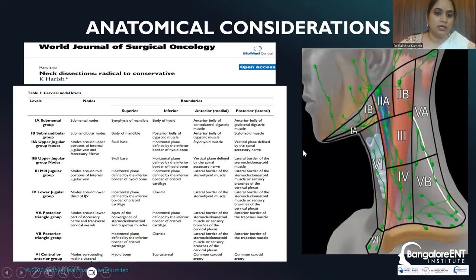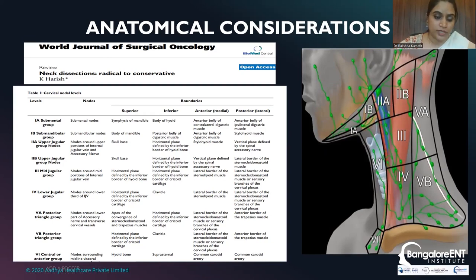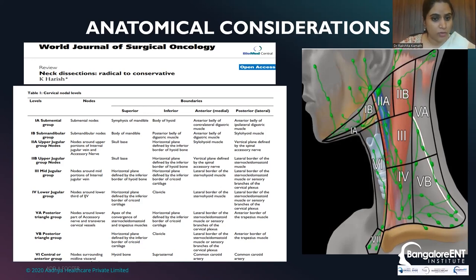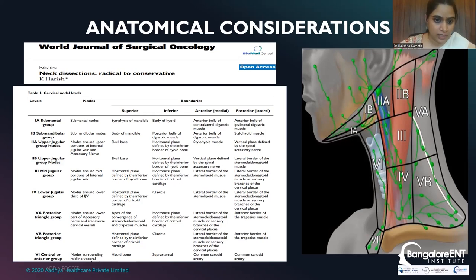Anatomical considerations are extremely important. Level 1a is the submental group: superiorly the symphysis of the mandible, inferiorly the body of the hyoid, anteriorly the anterior belly of the contralateral digastric, and posteriorly the anterior belly of the ipsilateral digastric. Level 1b is the submandibular group, bounded superiorly by the body of the mandible, with the posterior and anterior bellies of digastric and posteriorly the stylohyoid muscle. Level 2 is divided into 2a and 2b — upper jugular — running from the skull base to the horizontal plane defined by the inner border of the hyoid bone, with the vertical plane defined anteriorly by the spinal accessory nerve and posteriorly by the lateral border of the sternocleidomastoid.